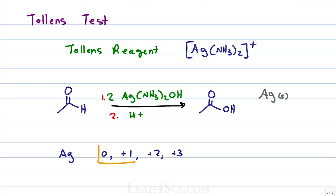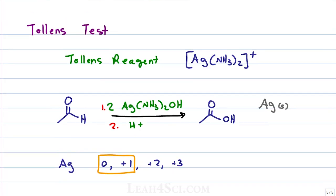What we care about is the plus one to zero transformation. Silver in the Tollens reagent has an oxidation number of plus one. Notice that ammonia is neutral which means the positive charge comes from the Ag1.